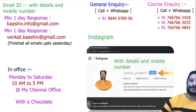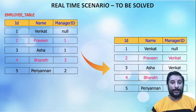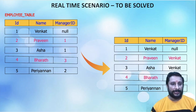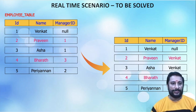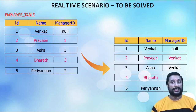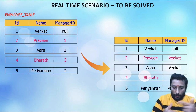Here is a real-time scenario. Venkat is a person who doesn't have a manager. Praveen is a person whose manager is Venkat. So Praveen's manager is Venkat, Asha's manager is Venkat, Bharat's manager is Asha, and Perian's manager is Praveen. We got this kind of data and we want to convert it into a restructured output — that is how we are going to work out.